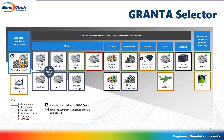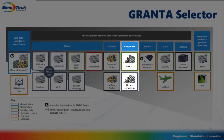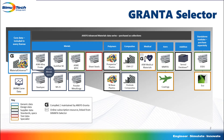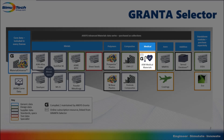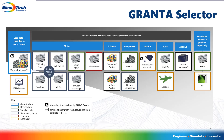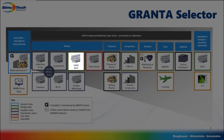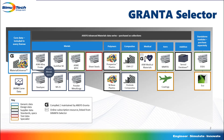The ANSYS Granta Selector is composed of many different material databases. These databases include data sheets for all types of materials, such as metals, polymers, and composites. It also contains data sheets for materials commonly used in medical, aerospace, and additive manufacturing applications. These databases include design data, such as the ASME Boiler and Pressure Vessel Code and MMPDS. They also include supplier data sheets, which allow you to find exact material properties for a certain supplier of the material in question.